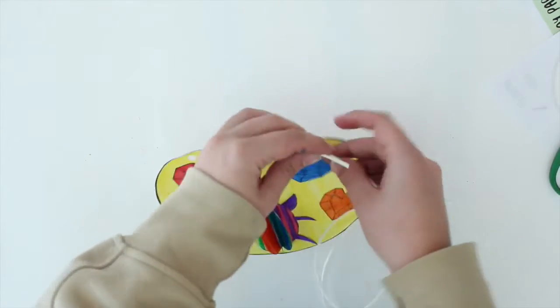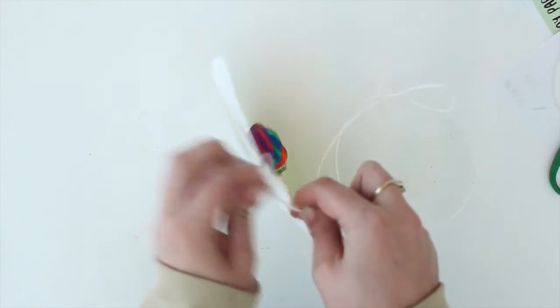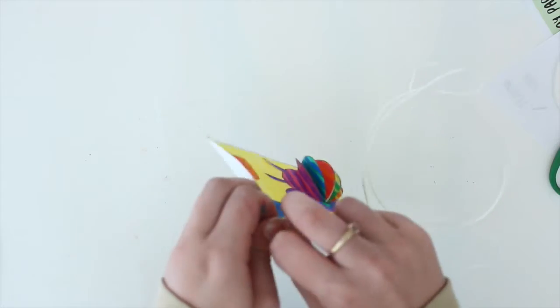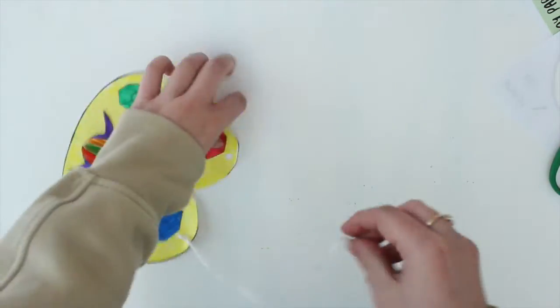Punch two holes in your amulet where you want your string to go, and tie them in a knot so that they do not slip off of your amulet because it is very precious. You spent lots of time on it.